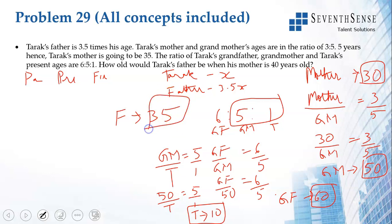The question is: how old would Tarak's father be when his mother is 40 years old? Mother is 30 now, so she will be 40 ten years later. Ten years later, father will be 35 + 10 = 45.